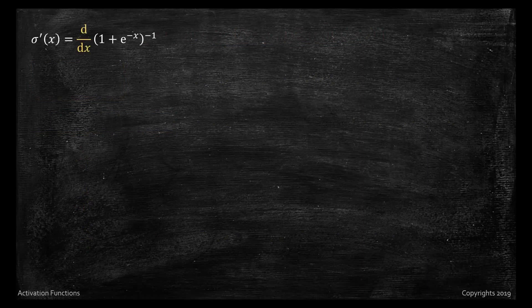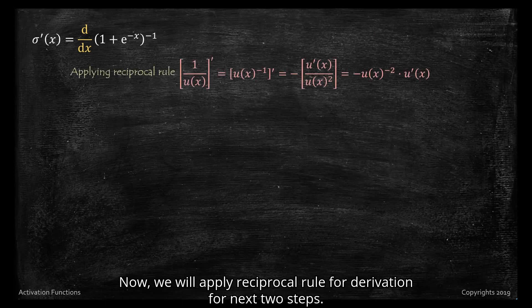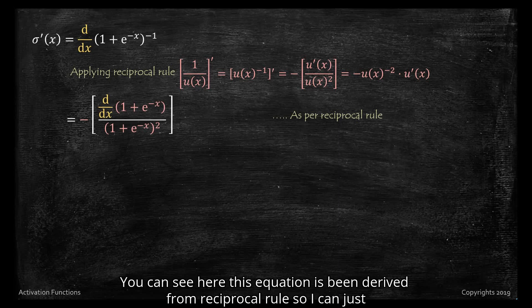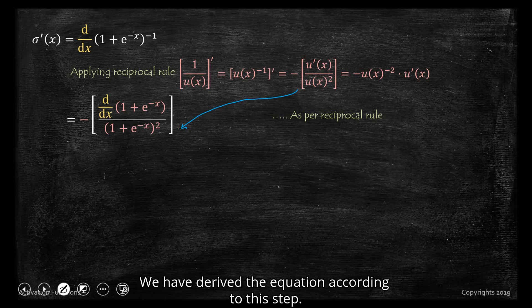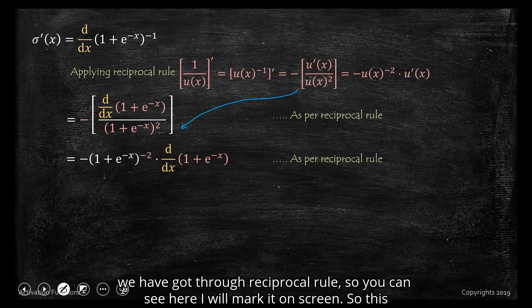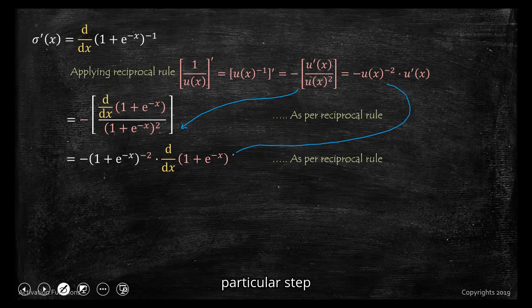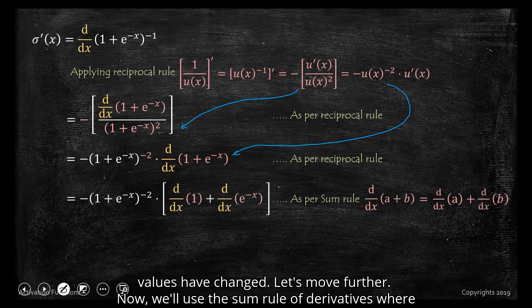Now we will apply the reciprocal rule for derivation for the next two steps. You can see this equation has been derived from the reciprocal rule — I'll mark it on screen. According to this step, the next step is again derived through the reciprocal rule. You can see here — I will mark it on screen — this particular step is the exact replica of the reciprocal rule; only the equation values have changed.